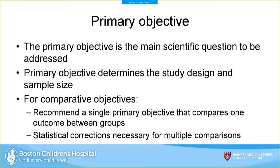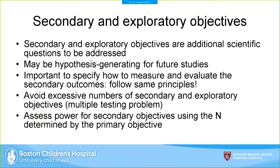The primary objective is your main scientific question and will determine the study design and sample size — you're designing the study around it. For comparative objectives, I generally recommend having a single primary objective that compares a single endpoint between groups, because if you have additional outcomes within the primary objective you would need to control for multiple comparisons. Secondary and exploratory objectives are additional scientific questions — more for hypothesis generation for future studies or simply to collect data to design a future study.